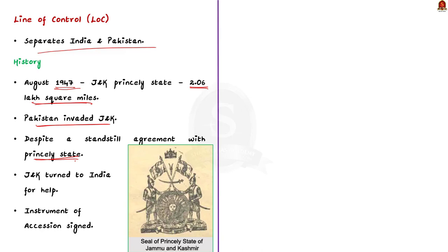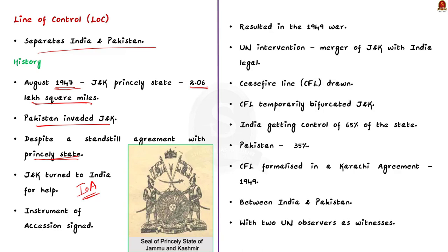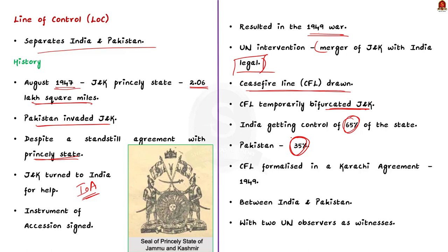This made Jammu and Kashmir turn to India for help, and both India and Jammu and Kashmir signed the Instrument of Accession. After signing the instrument, India responded to the Pakistani intrusion. It resulted in the 1949 war. Then came the intervention of the United Nations, which accepted the merger of Jammu and Kashmir with India. A ceasefire line was drawn depending on the actual positions held by the two armies, temporarily bifurcating Jammu and Kashmir — with India getting control of about 65% of the state and Pakistan the rest 35%. This ceasefire line was formalized in the Karachi Agreement signed in the latter part of 1949.